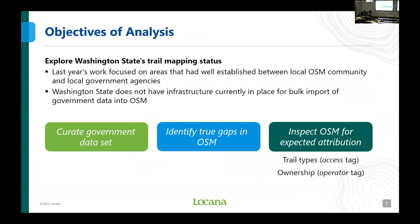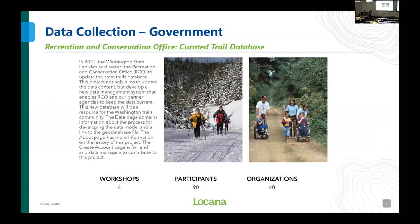We did that to create a control — going through areas that had a relationship between the local OSM community and the local government agency. What we were seeing in those places was a relationship where they would do bulk imports of government data into national parks and forests. This year we decided to remove that control and provide a case study in an area where we knew there was no existing infrastructure between the local OSM community and the local government agency. The objective is to curate a government dataset to identify true gaps in OSM, and then inspect OSM for expected attribution — things like trail types with an operator tag or access tag, and ownership with access tags.